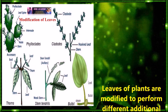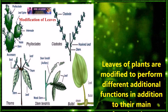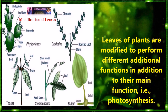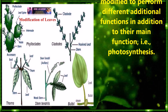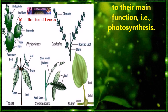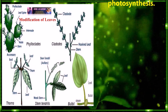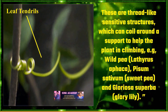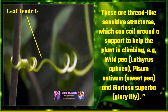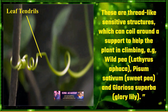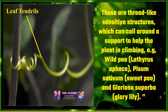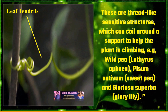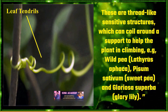Let us discuss the modification of leaves. Leaves of plants are modified to perform different additional functions in addition to their main function, that is photosynthesis. Leaf tendrils: these are thread-like sensitive structures which can coil around a support to help the plant in climbing. Examples: wild pea, sweet pea, glory lily, etc.